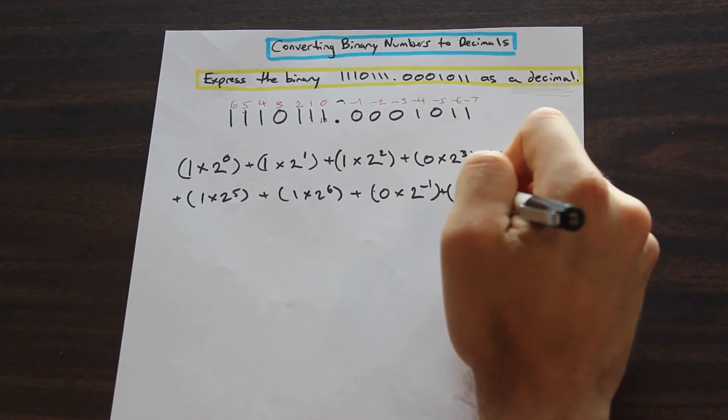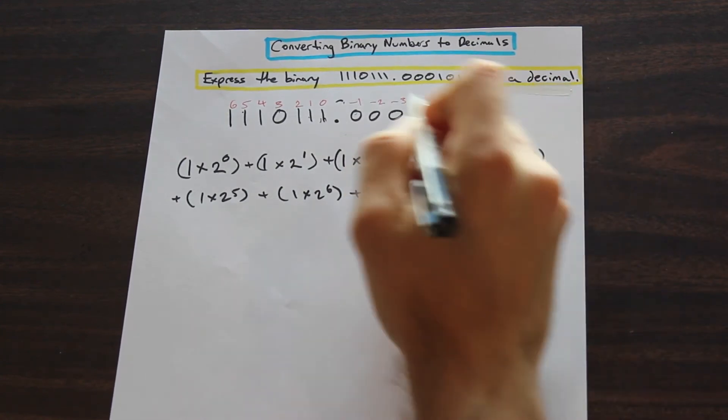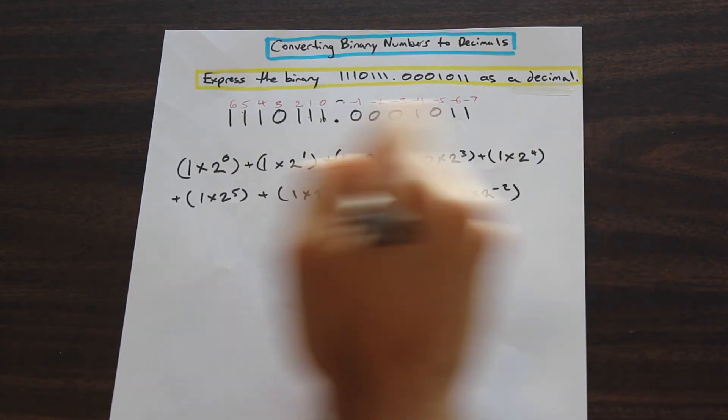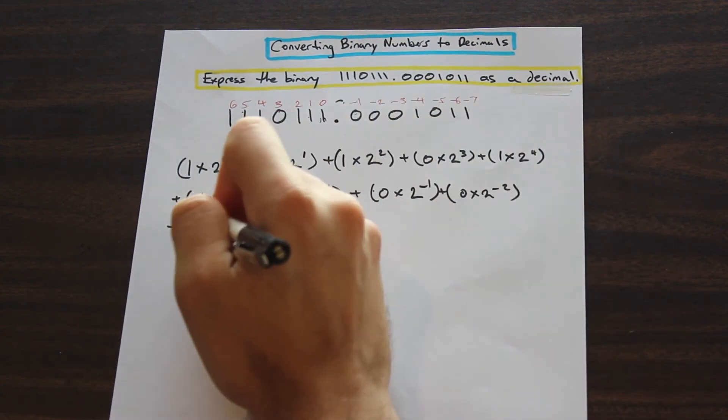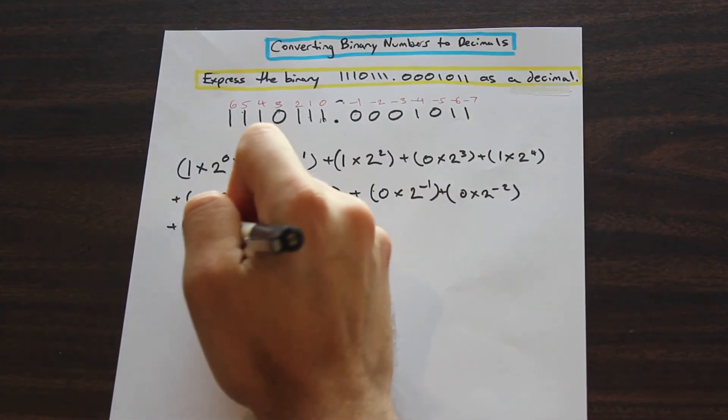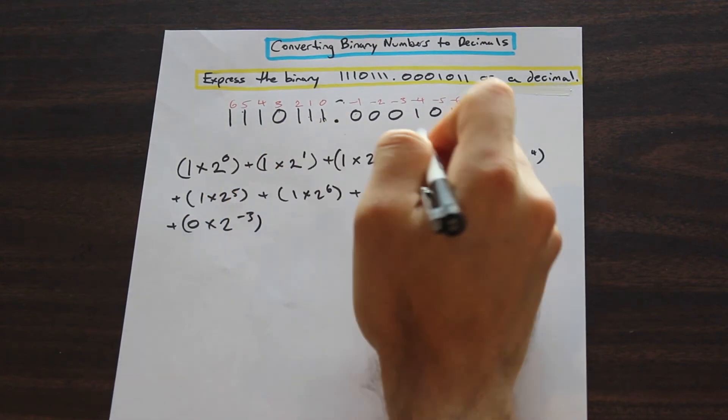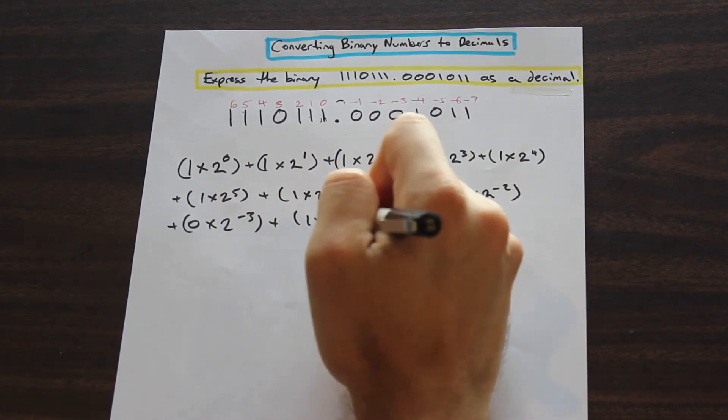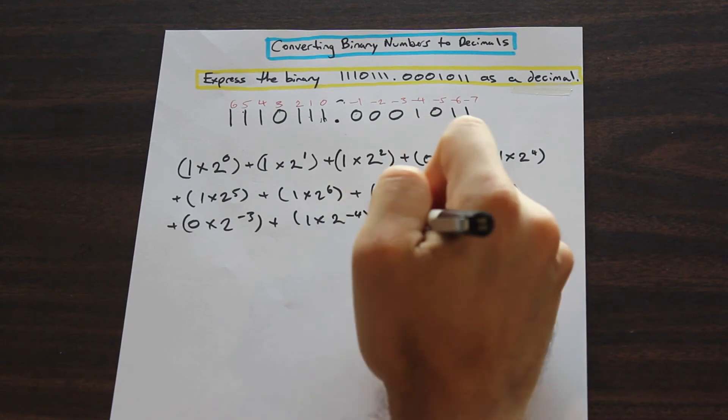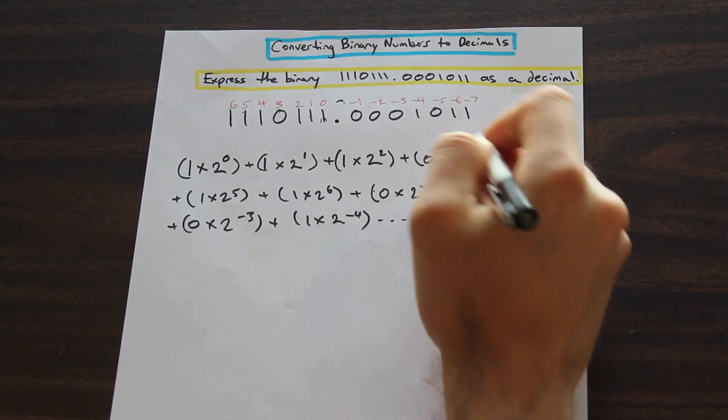So we're going to have 0 times 2 to the power of negative 2, right, and I'm just going to come down here plus 0 times 2 to the power of negative 3. Plus 1 times 2 to the power of negative 4 and so on. I'm not going to write them all.